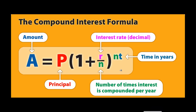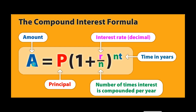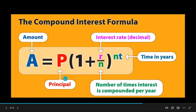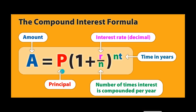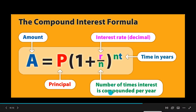Moving on to the formula, the compound interest formula looks like this: A equals P times 1 plus R over N raised to NT. A is the accumulated amount — that is the maturity amount. P is the principal, the initial value — what was given to you when you borrowed. R is the interest rate, represented in decimal form. N is the number of times interest is compounded per year — the terms.